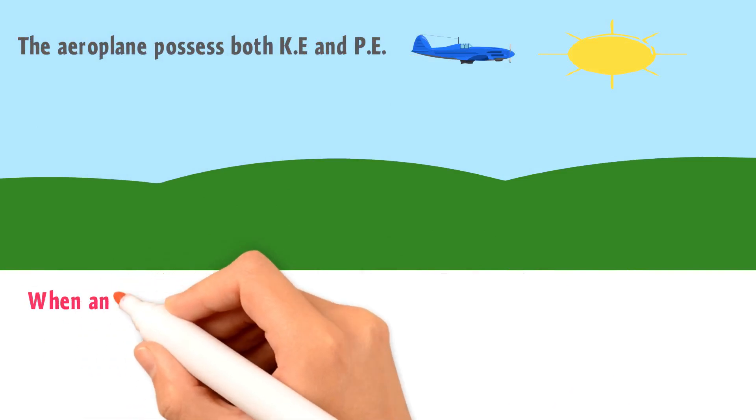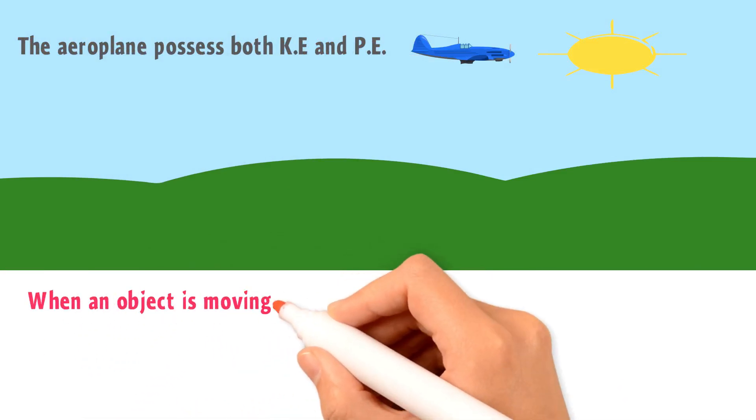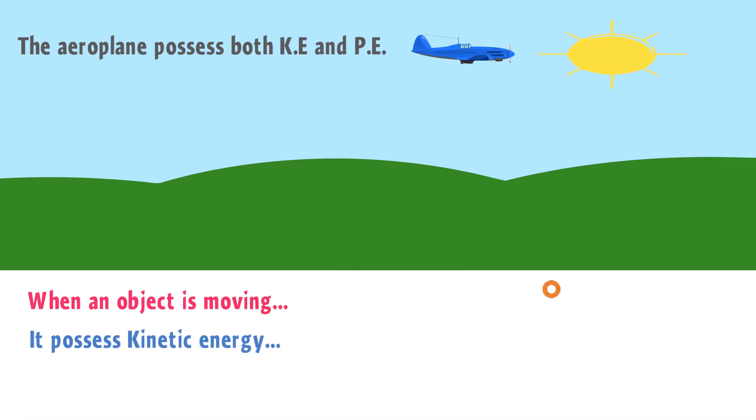the aeroplane possesses both kinetic energy and potential energy. We learn that when an object is moving, it possesses kinetic energy. Here, the aeroplane is moving, hence it possesses kinetic energy.